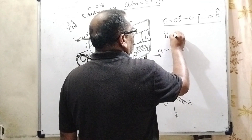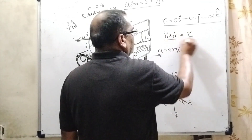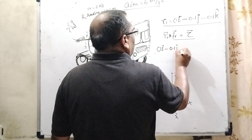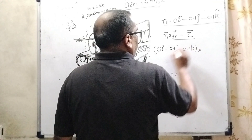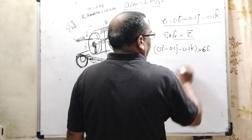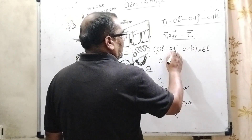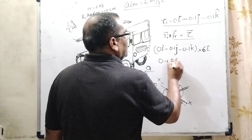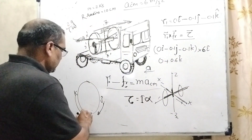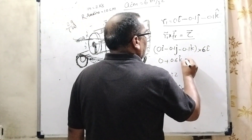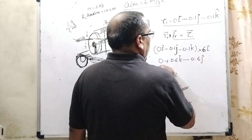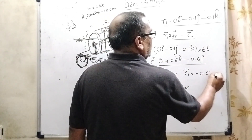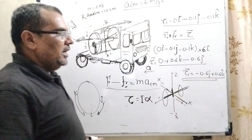Now tau1 equals r1 cross FR. Substituting: (0i minus 0.1j plus 0.1k) cross (6i). Using cross product properties: i cross i equals 0; j cross i equals minus k, giving minus(minus 0.1)(6)k equals plus 0.6k; k cross i equals j, giving 0.1 times 6 times j equals 0.6j. Wait, re-arranging: tau1 equals minus 0.6j plus 0.6k Newton-meter.